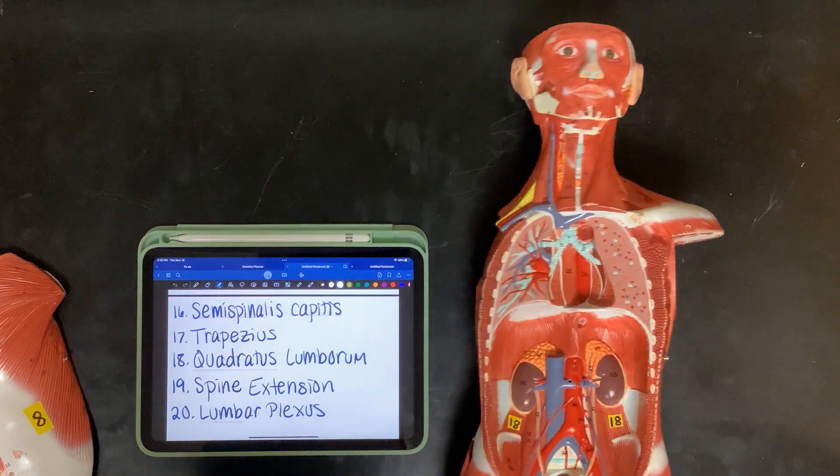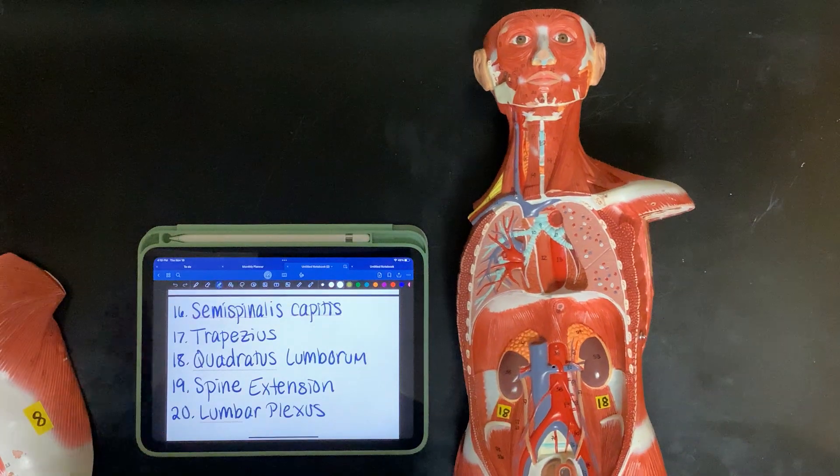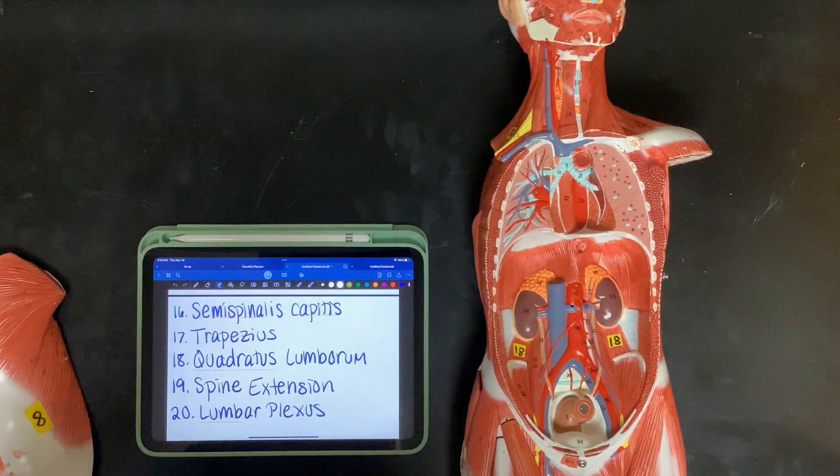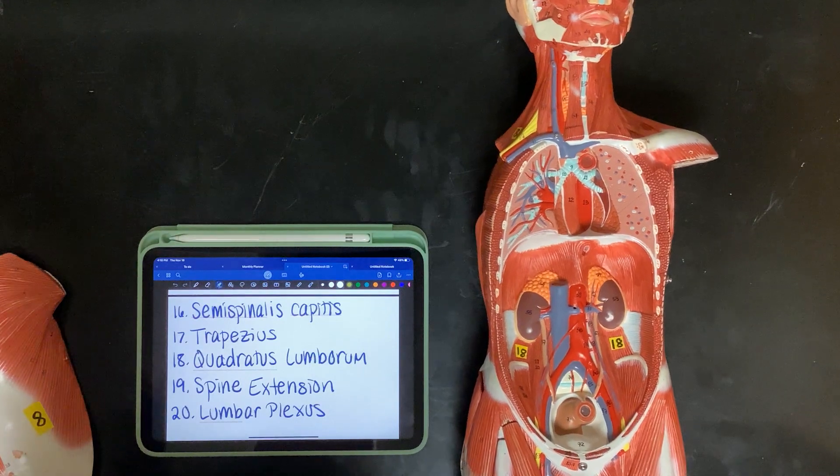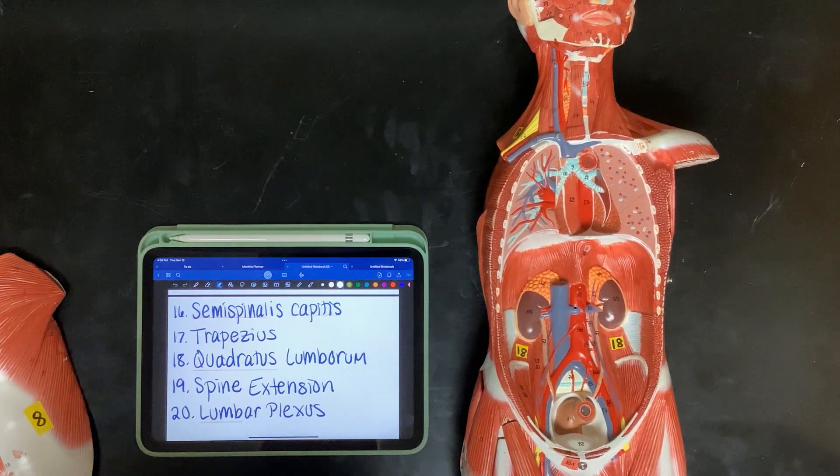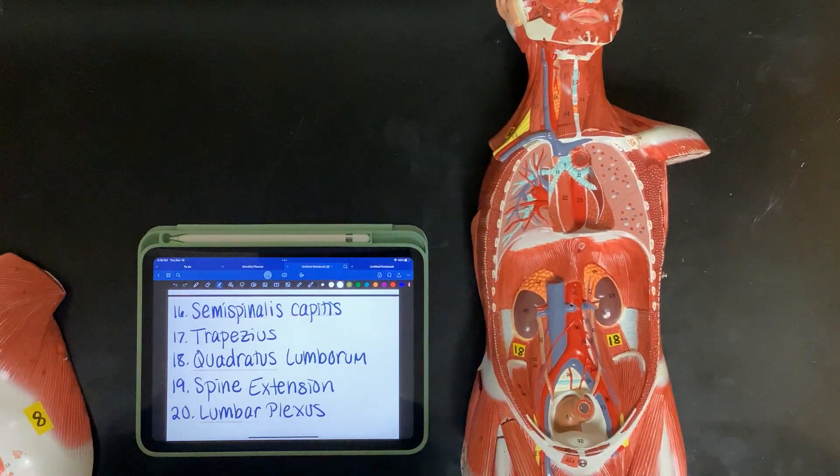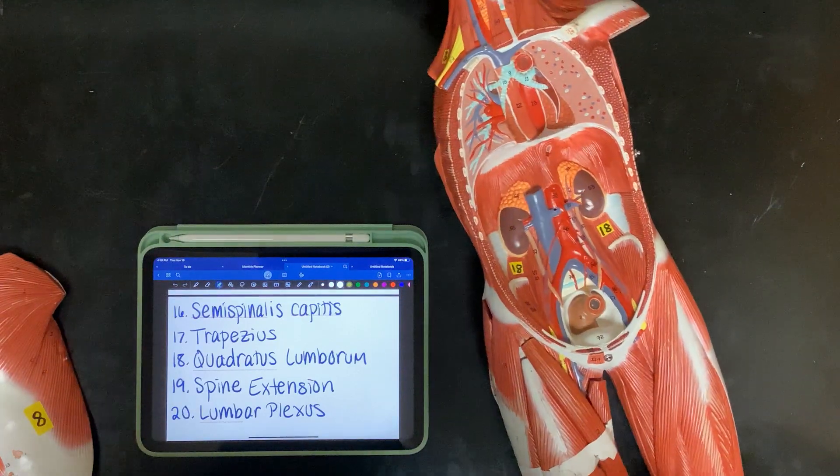Eighteen, quadratus lumborum. These all, when they contract bilaterally, do spine extension. And eighteen is innervated by the lumbar plexus. I hope that was helpful.